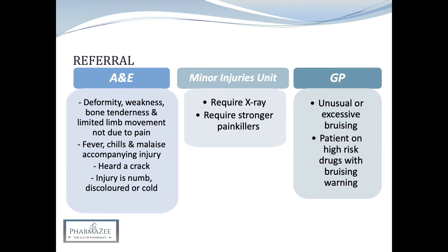A patient may be referred to a minor injuries unit if they require an X-ray, but be aware that not all minor injury units have X-ray facilities so they may need to be referred to hospital. If a patient requires stronger painkillers to be prescribed, they may also attend a minor injuries unit. Regarding GP referral, if there is unusual or excessive bruising for no apparent reason, a patient should be referred to their GP to rule out more serious underlying diseases such as leukaemia. Bruising may also result from side effects of drugs such as steroids and carbimazole — in the case of carbimazole, patients should be advised to tell their doctor immediately. Excessive bruising should also be referred urgently if the patient is taking anticoagulants, as this is likely caused by haemorrhage due to incorrect dosing or other underlying conditions.